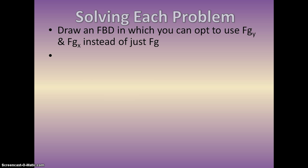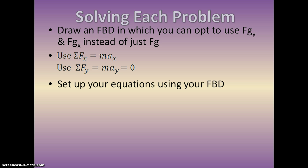So how do you solve each problem? First, draw an FBD in which you can opt to use FGY and FGX instead of just FG. Honestly, I would start doing this, as long as you can remember that FGY is using cosine and FGX is using sine. Next step, as always, use sum of the forces in the X equals MAX. Sum of the forces in the Y equals MAY. Is it accelerating in the Y axis? Probably not, if we're on an incline. As I said yesterday, I promise, if it's on an incline, there's going to be no problem that says accelerate off the Y axis. Set up your equations using your FBD, and then, like you did in the past, you replace all these things. Substitute in mg cosine theta for FGY, mg sine theta for FGX, and as we did in our past topic, mu times the normal for FF.